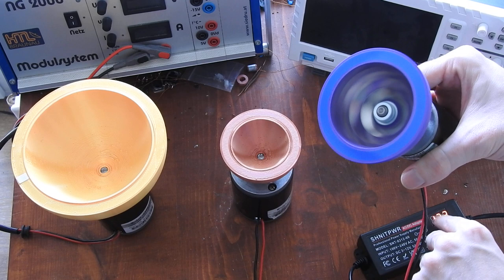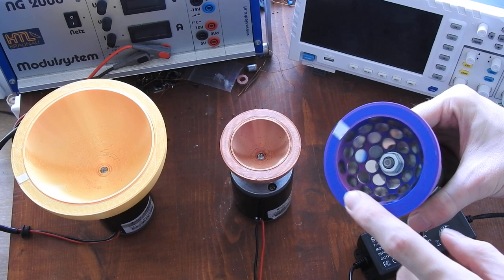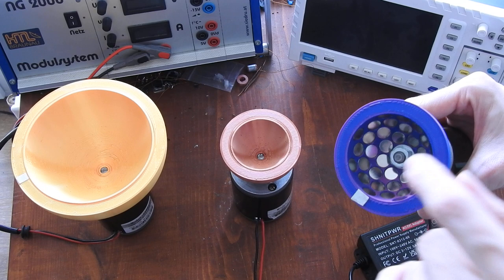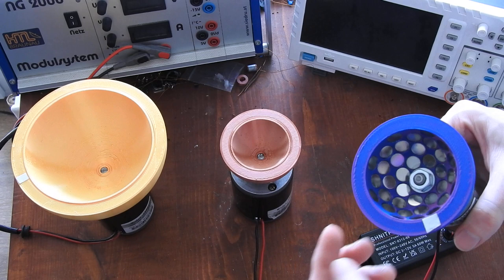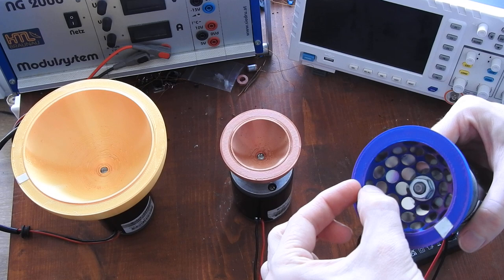So the 3D printing files for the array itself will be provided in the video description so you can easily build it yourself. You just have to print this array, insert all of these 40 magnets—they are 10 millimeters in diameter and 6 millimeters tall. If you can't find them 6 millimeters tall, you can also use two 3-millimeter tall, 10-millimeter magnets.